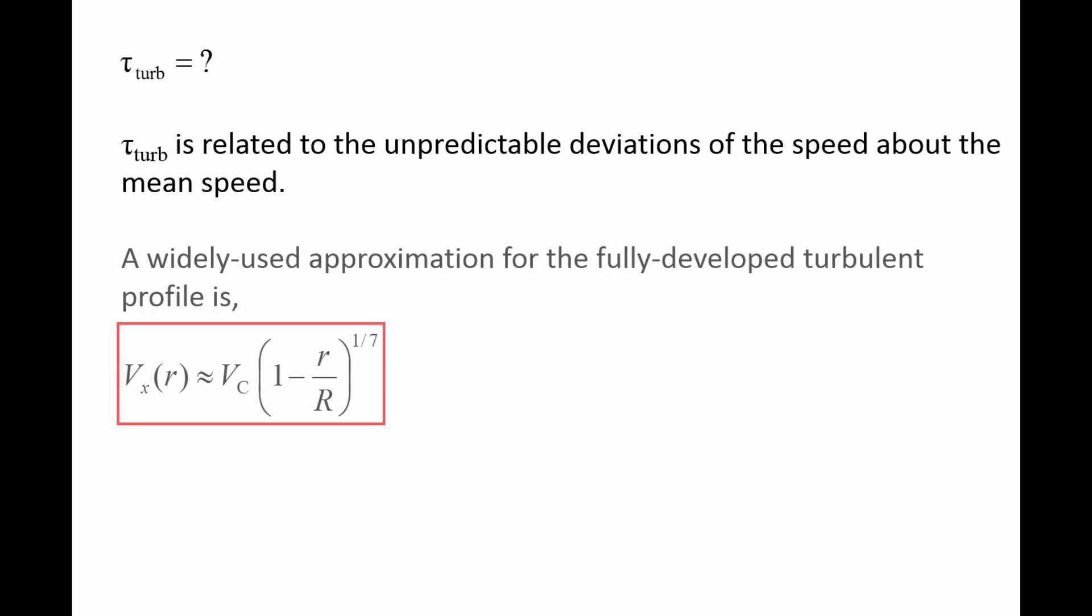A widely used approximation for the time-averaged, fully developed turbulent velocity profile is a power law. The centerline speed times the quantity, one minus the radial distance lowercase r over the pipe radius capital R, to the one-seventh power.